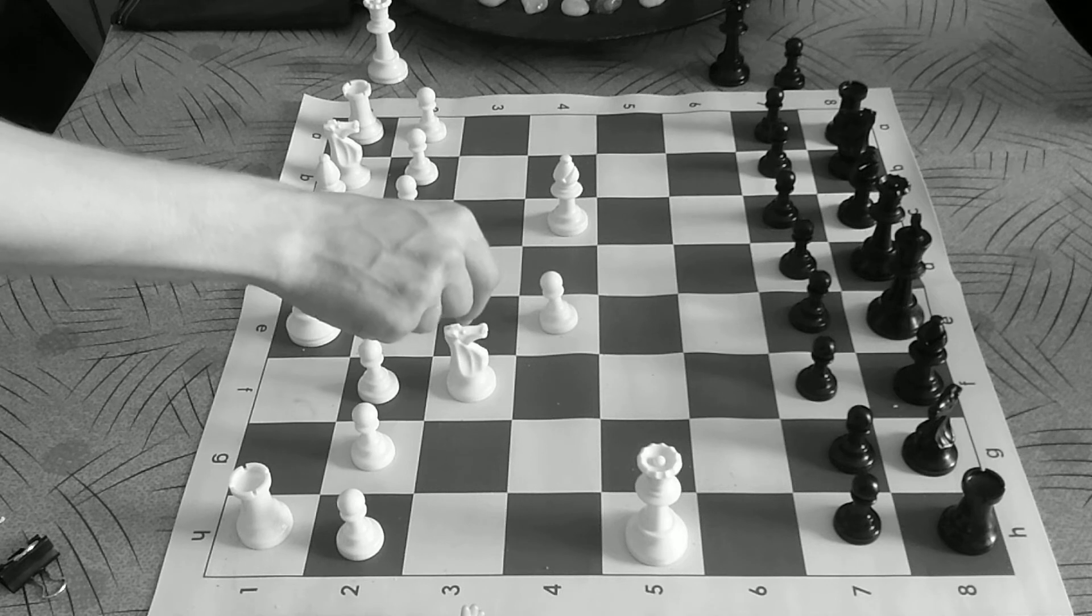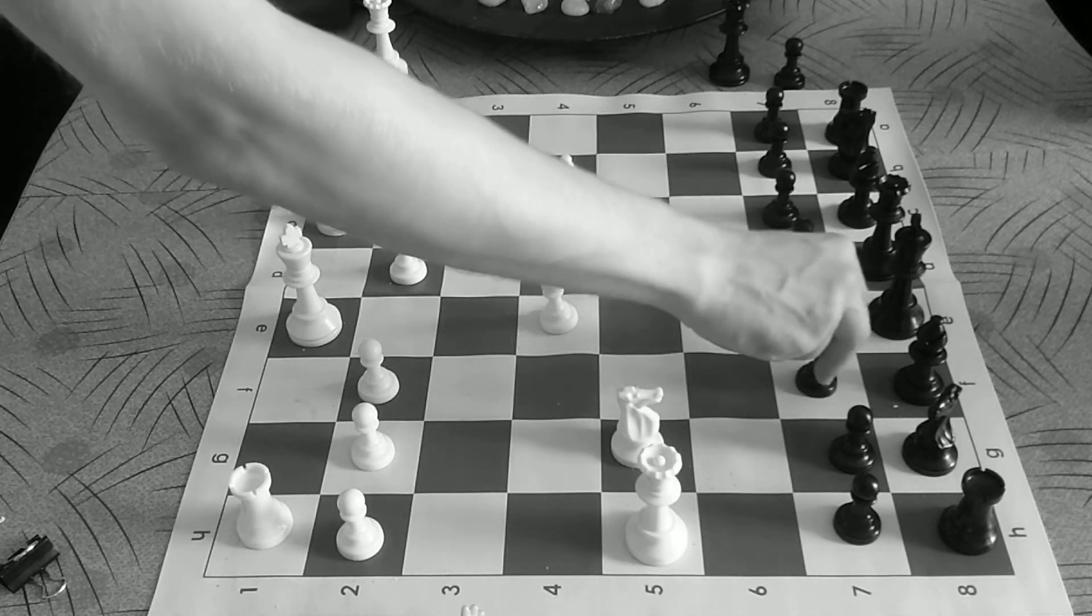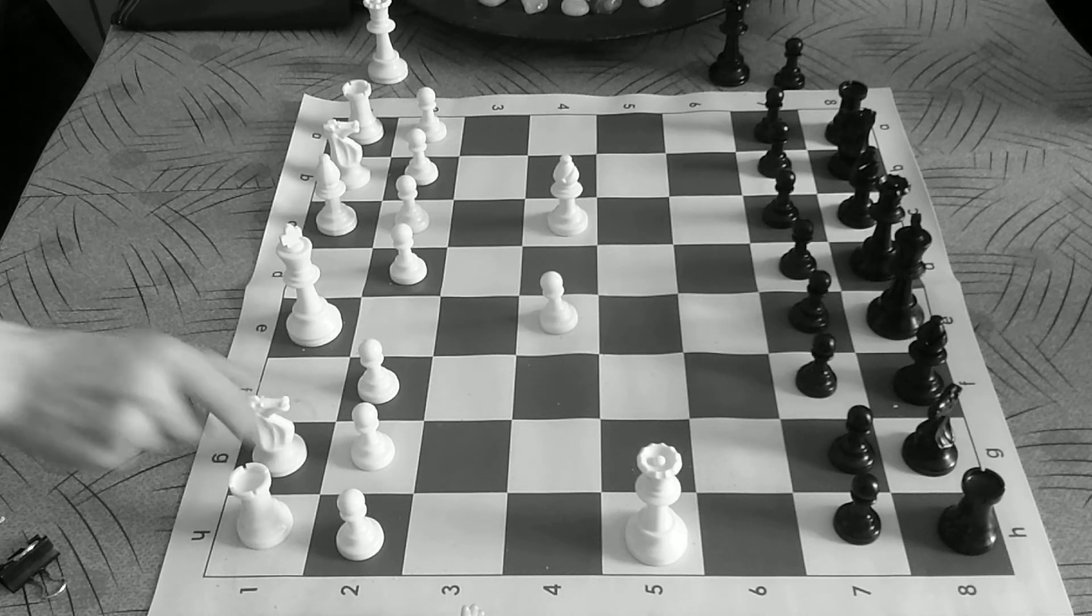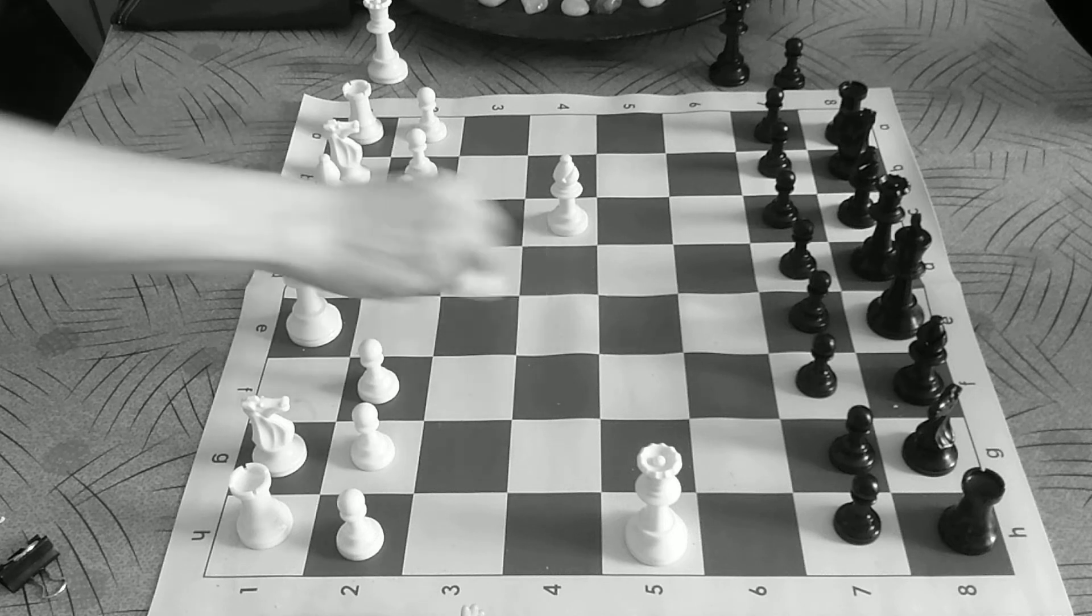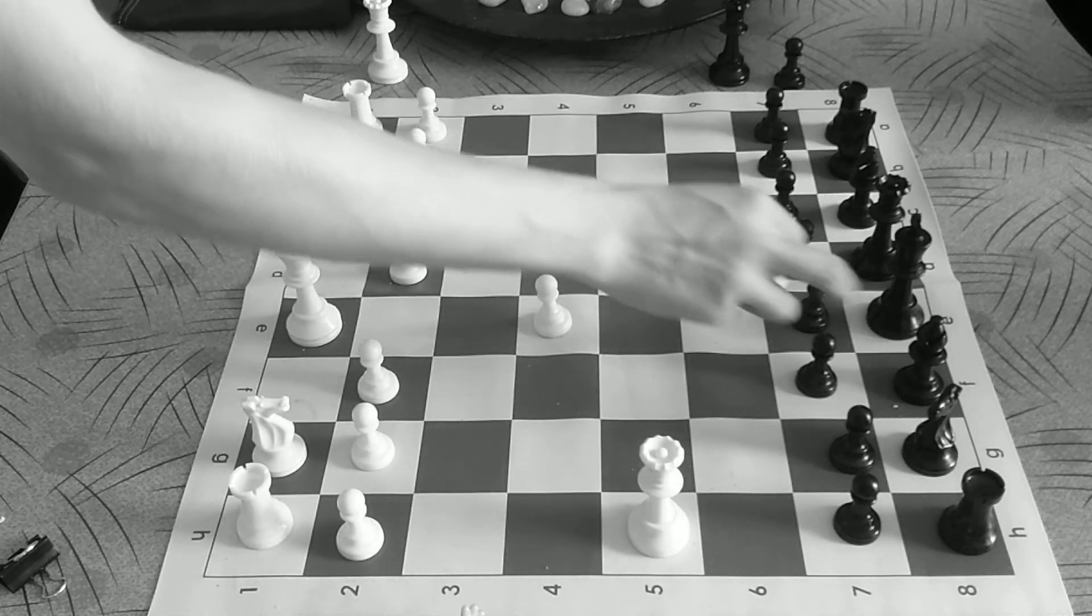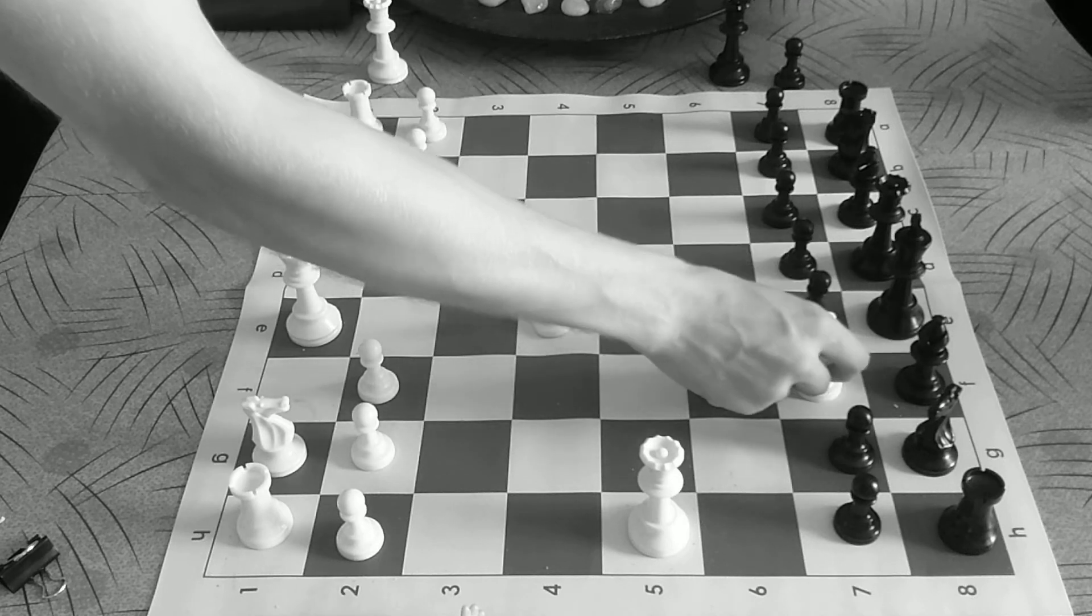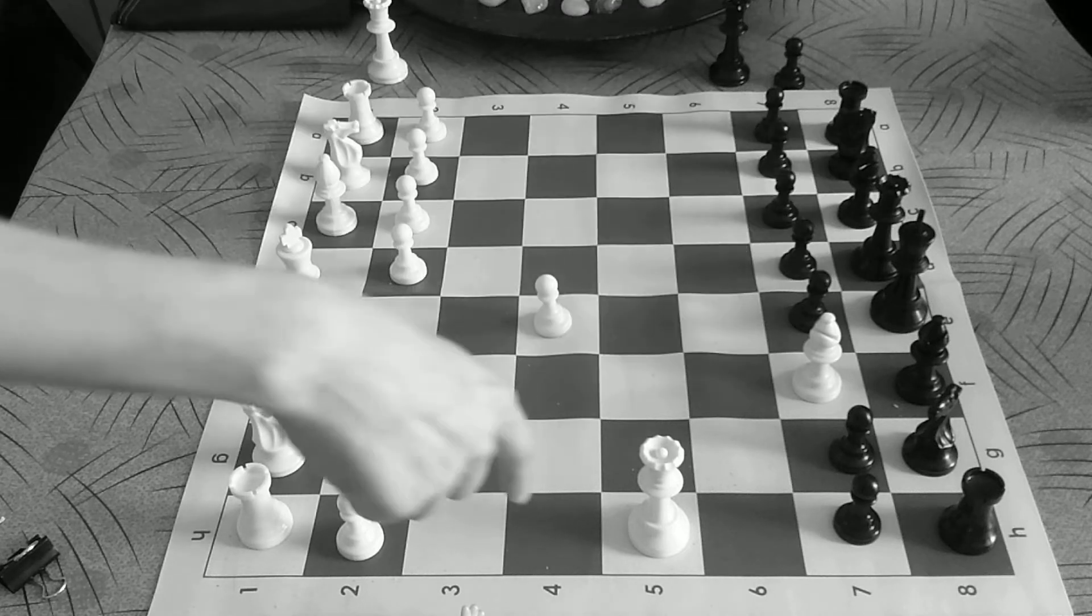You would also try to work this knight here and then here to put extra pressure on that f7 pawn. But for the purposes of the 4 move checkmate, these are the 4 moves: 1, 2, 3, and then if they don't defend it, 4 is checkmate because the king cannot take this or move out of the way.